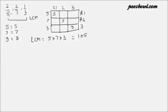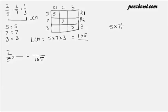Now we need to convert or make the denominators of all these fractions to 105. We need to multiply the denominator of all three fractions with such a number that makes its denominator 105. For 2 upon 5, we already have 5 in the denominator. What is left from 5 × 7 × 3 is 7 multiplied by 3, that is 21. So 21 is the number we need to multiply with both the numerator and denominator. 21 multiplied by 2 is 42 and 21 multiplied by 5 is 105.